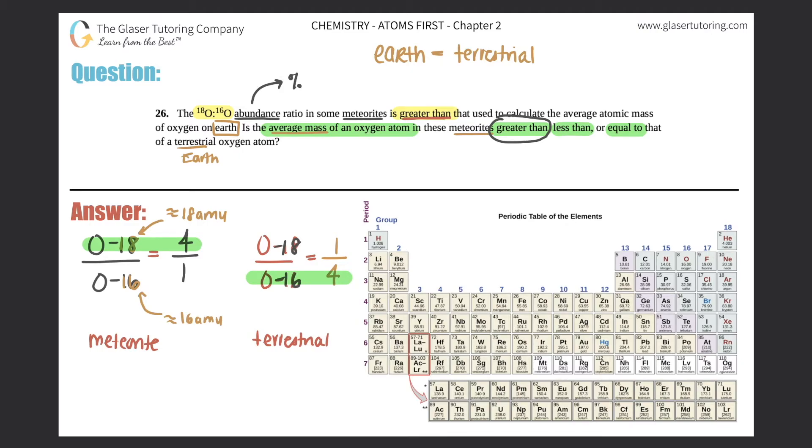So would the average mass of oxygen atom in the meteorite be greater than, less than, or equal to? If you have majority of oxygen-18, the mass would be closer to 18. If you have majority of 16, the overall mass would be basically 16. And this is greater than 16. 18 is greater than 16.